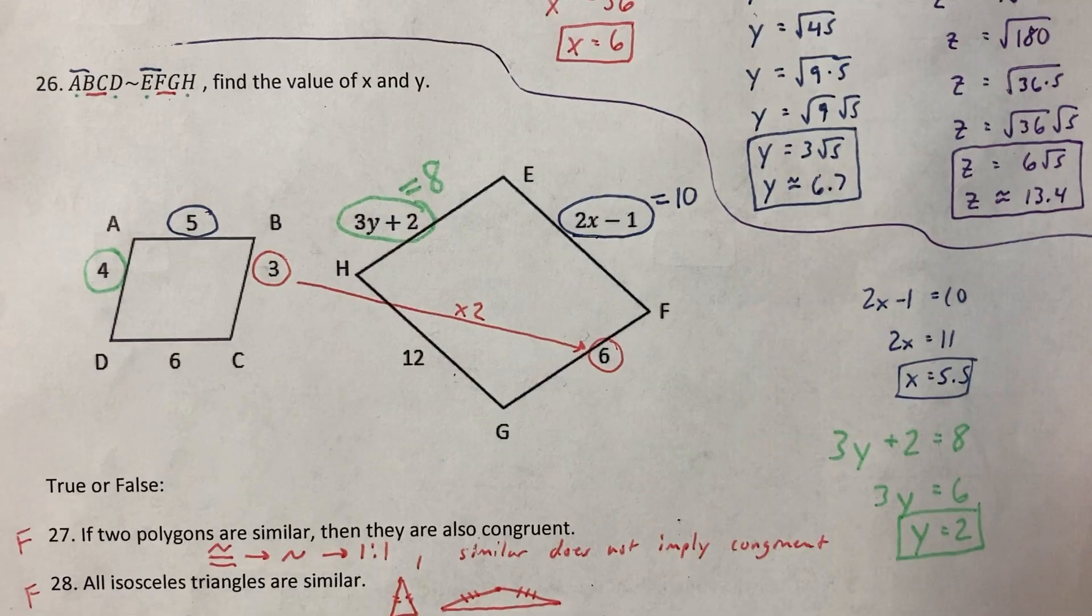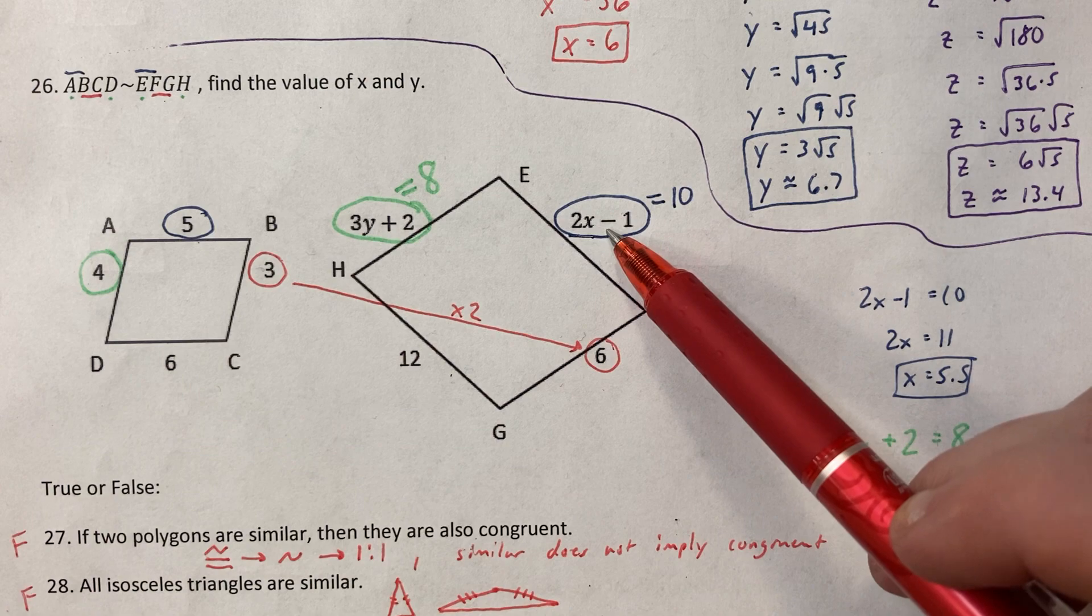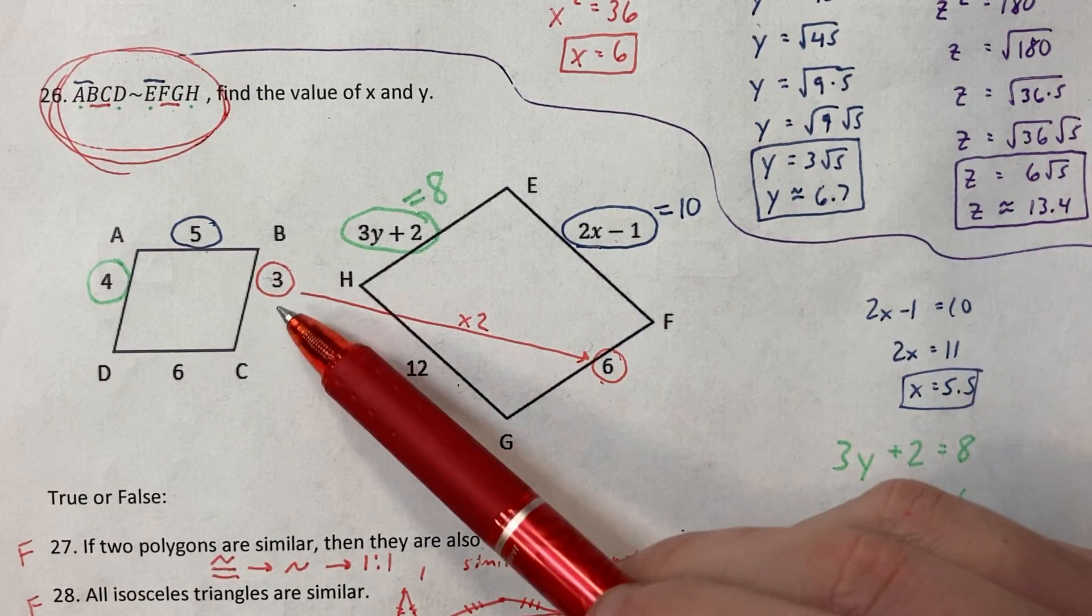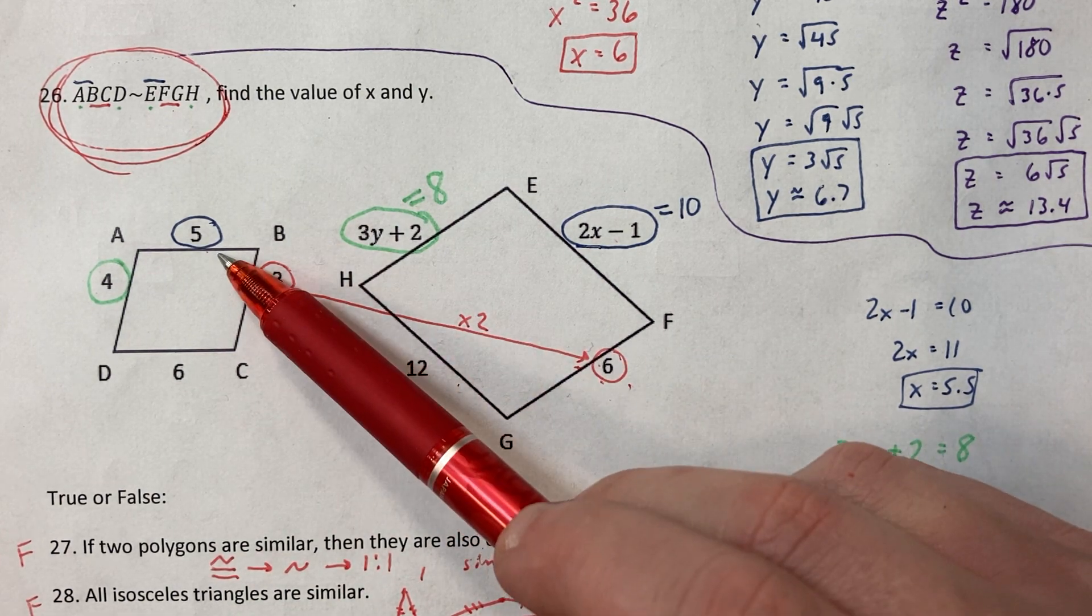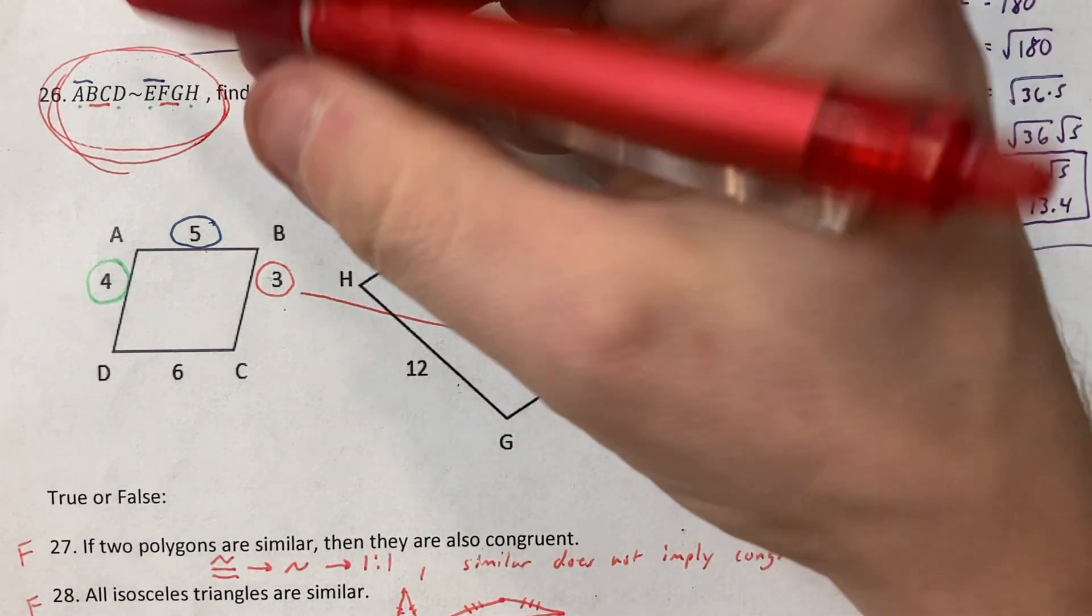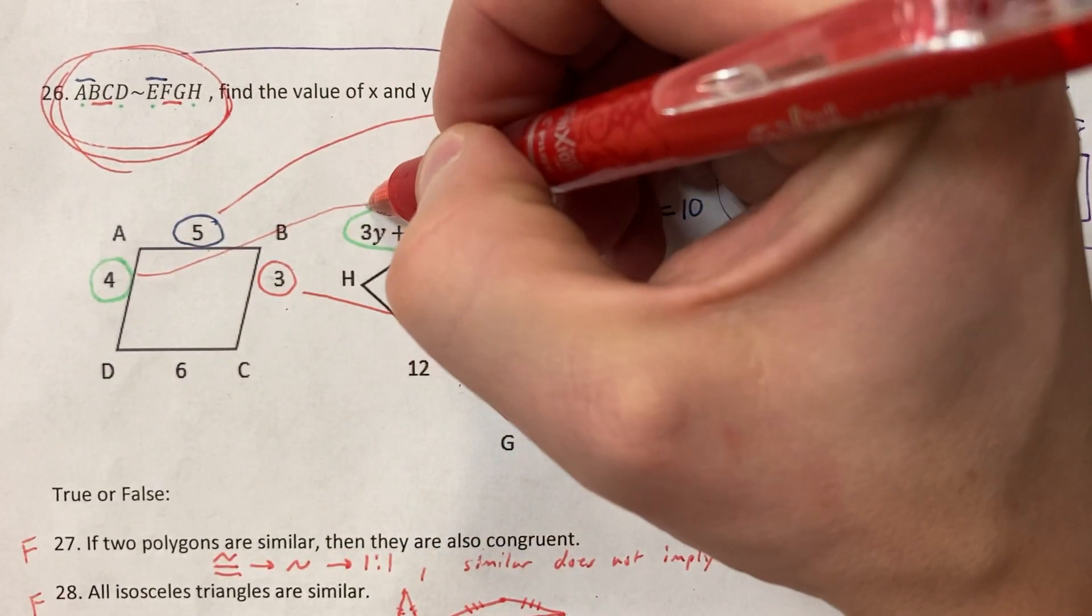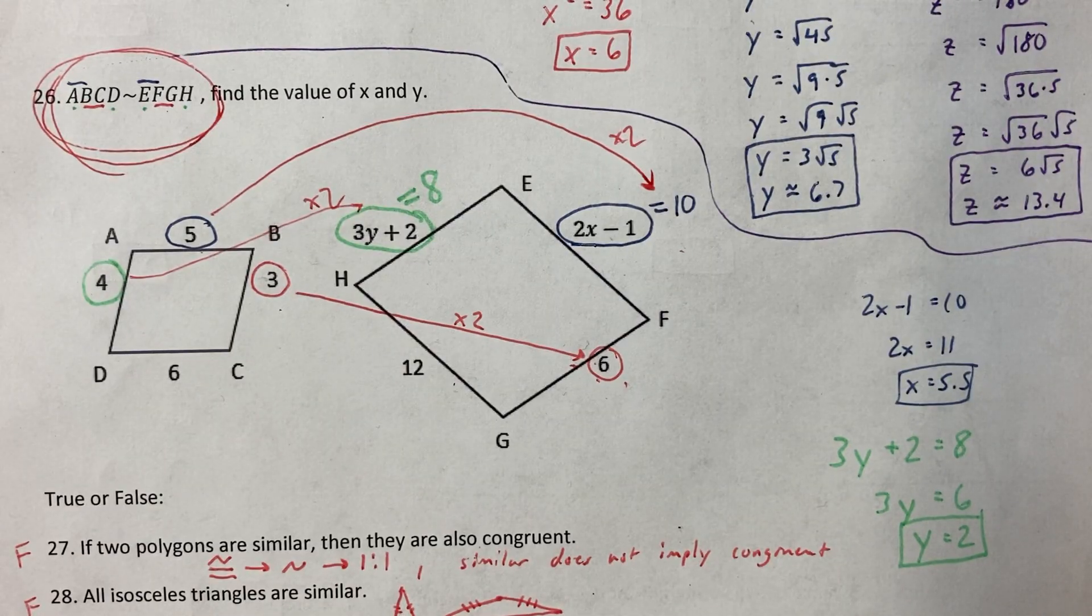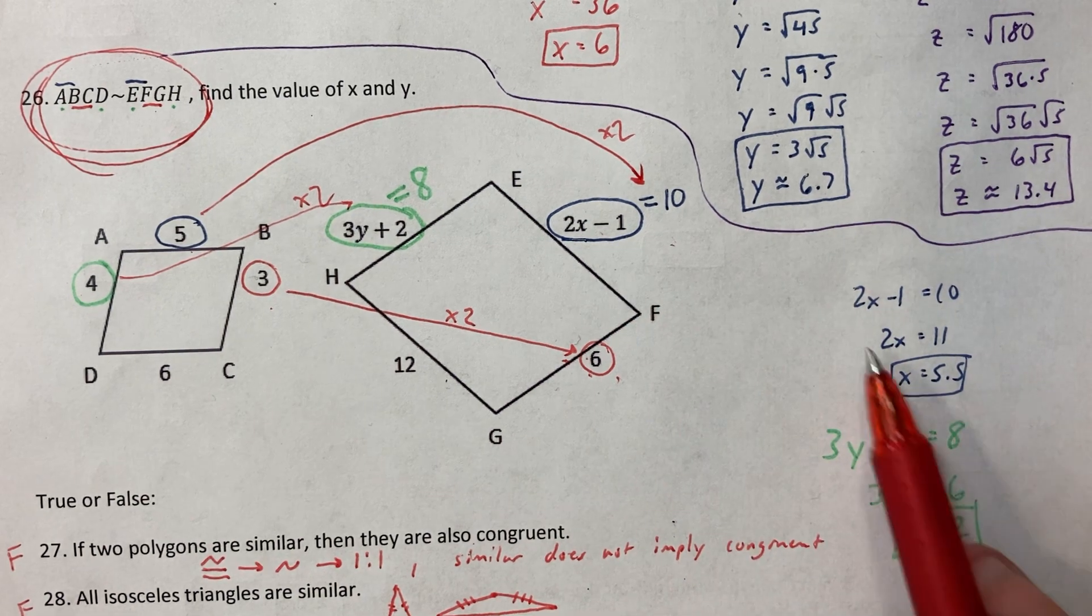26 was all about matching. The 5 matched up with the 2X minus 1. The 3 matched up with the 6. When I matched up the 3 with the 6, I saw a double relationship. So 3 times 2 is 6. 5 times 2 is 10. You have to multiply times 2. Don't set them equal. Then it's really easy. 2X minus 1 equals 10. You can do that.